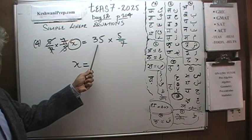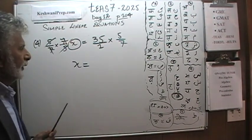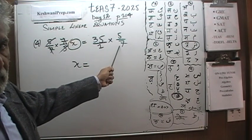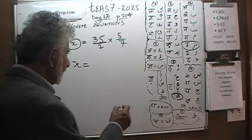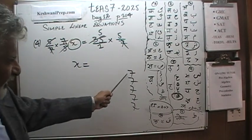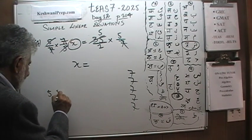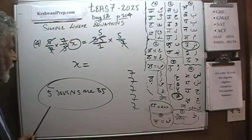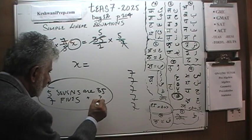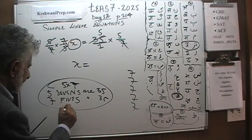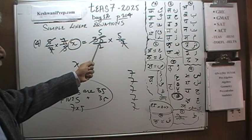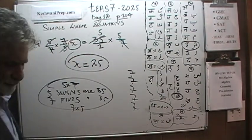Now this 35 is 35 over 1, so we multiply the two fractions. We have a 7 on the bottom and 35 on the top — 35 is a multiple of 7. Divide top and bottom by 7: 35 divided by 7 is 5, leaving 5 times 5 equals 25. So x equals 25.